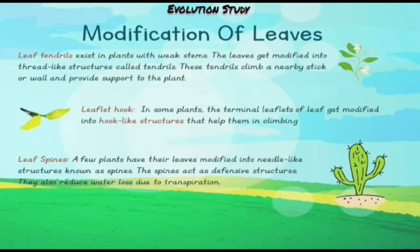What is a leaflet hook? In some plants, the terminal leaflets of the leaf get modified into hook-like structures that help them in climbing. What is a leaf spine? A few plants have their leaves modified into needle-like structures known as spines. The spines act as defensive structures and also reduce water loss due to transpiration. A picture of a cactus plant is shown below.